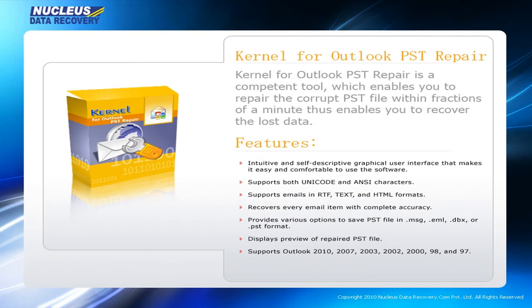Kernel for Outlook PST Repair is a competent tool which enables you to repair the corrupt PST file within fractions of a minute, thus enabling you to recover the lost data. Key features of the software are: an intuitive and self-descriptive graphical user interface that makes it easy and comfortable to use; supports both Unicode and ANSI characters; supports emails in RTF, text, and HTML formats; and recovers every email item with complete accuracy.